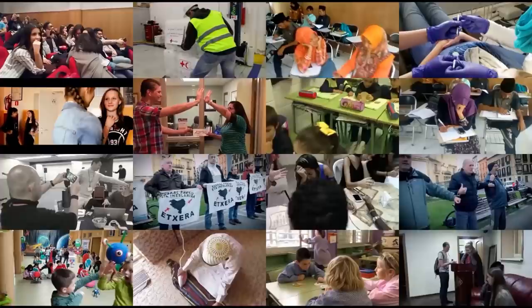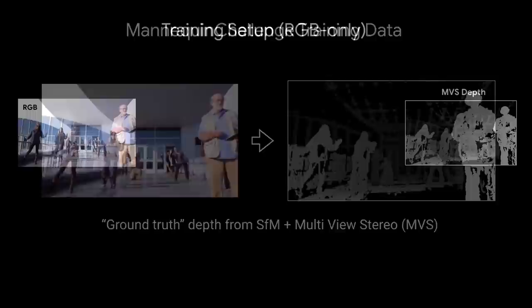Our dataset spans a large range of scenes, poses, ages, and number of people. Because people are stationary, we can use structure from motion and multi-view stereo to recover depths, which are used as ground truth supervision during training.